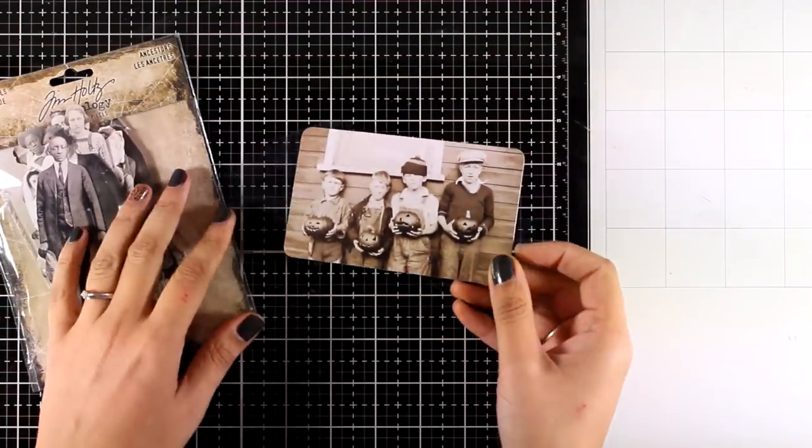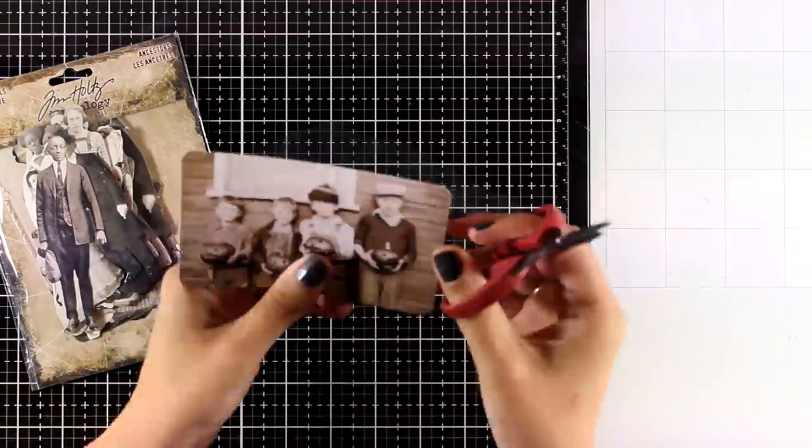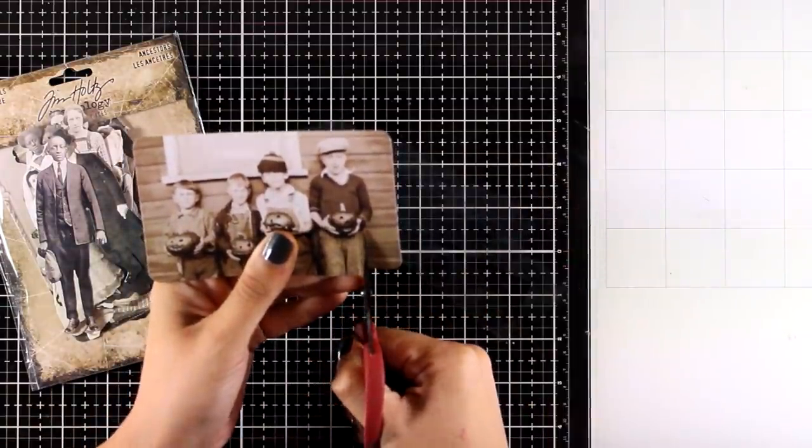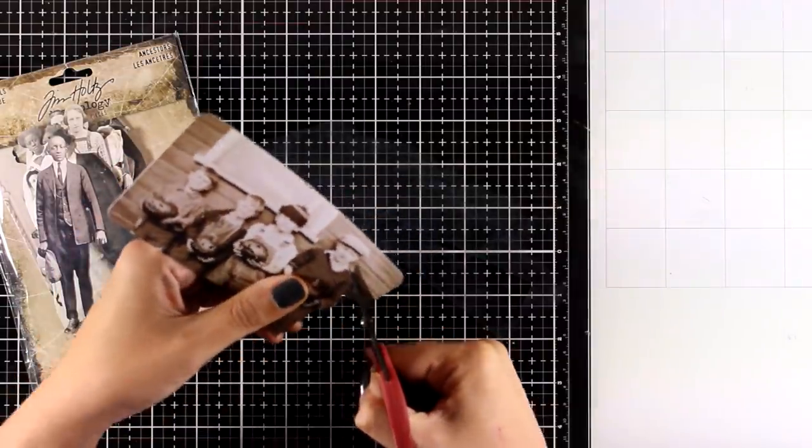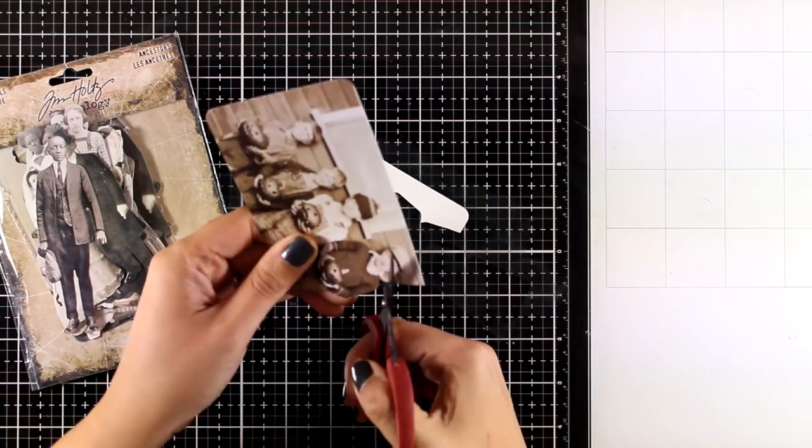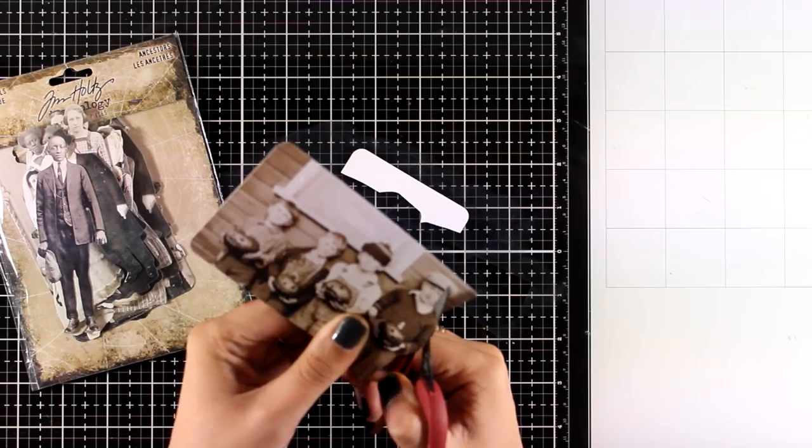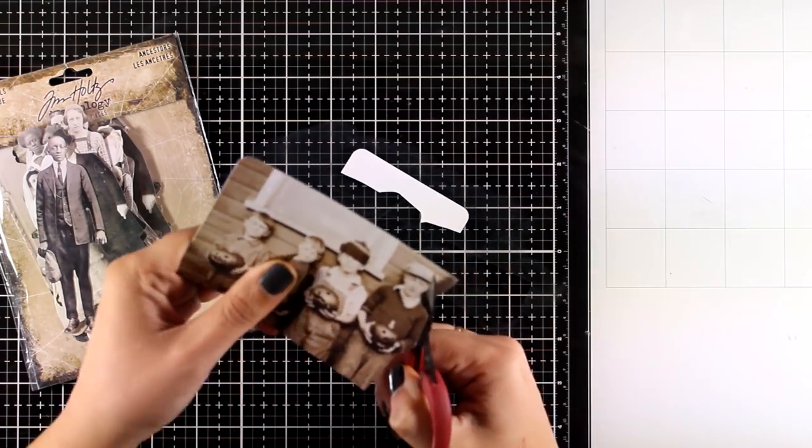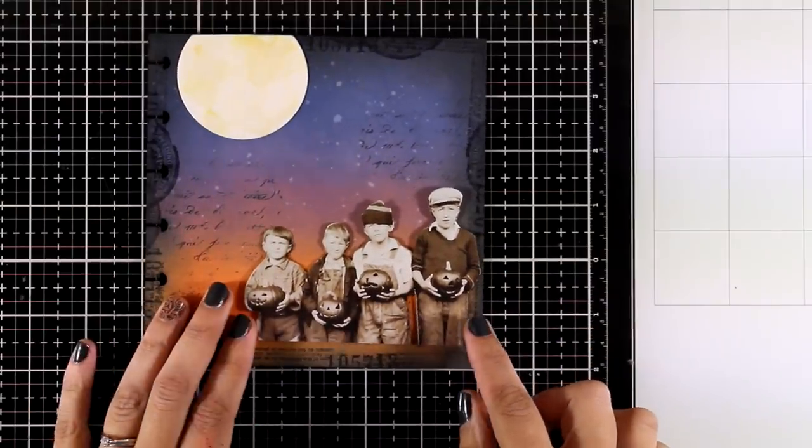Now I will work on my focal point. For that I decided to go with the boys that hold the pumpkins. This is a photograph which comes in the packaging, the ancestors packaging by Tim Holtz, and this is the Halloween themed one. This is the exact same that I used yesterday for my witches project. I'm using my scissors to separate them from the background since I created my own.